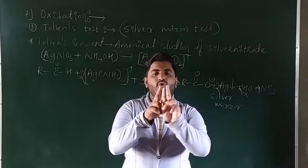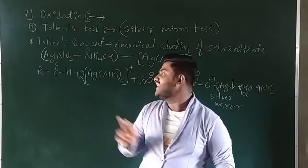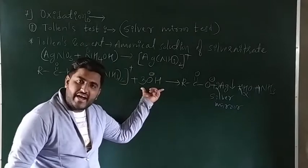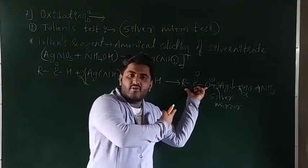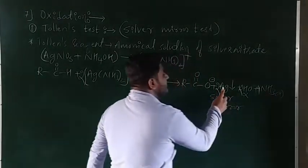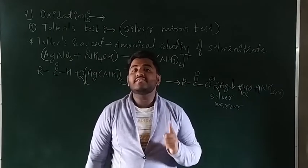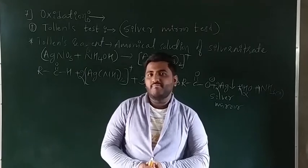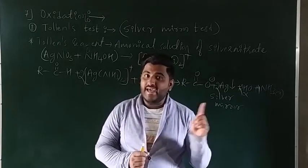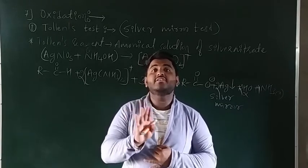To summarize Tollens test: Tollens reagent is a mixture of silver nitrate and ammonium hydroxide, giving the complex Ag(NH3)2⁺ with silver in +1 oxidation state. When aldehyde is added in basic medium, carboxylate ion is formed, silver is reduced to silver precipitate, and ammonia gas is evolved. The silver mirror confirms an aldehyde functional group. Tollens reagent is a mild oxidizing agent — it can oxidize aldehyde but not the ketonic functional group.